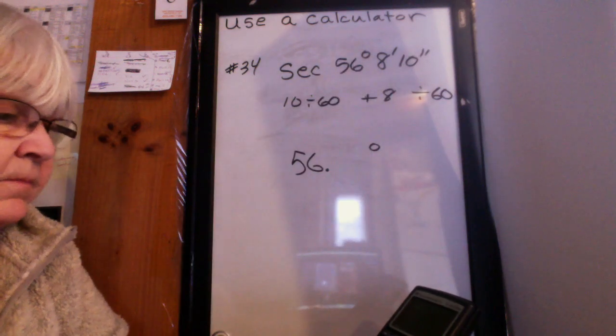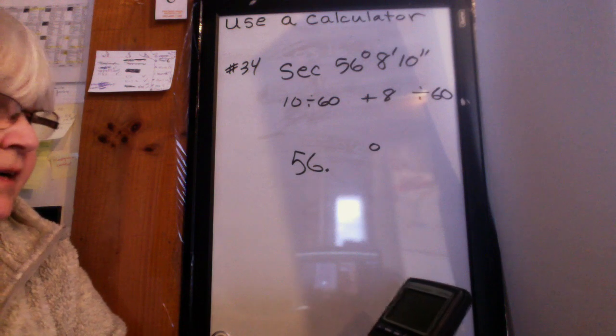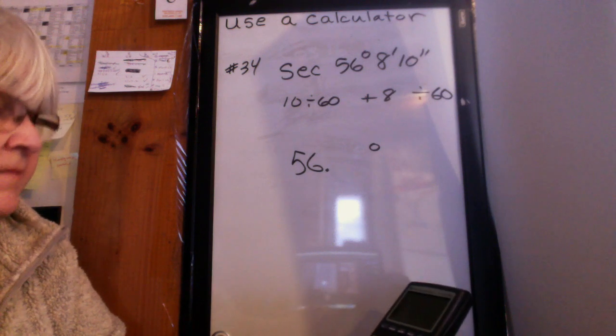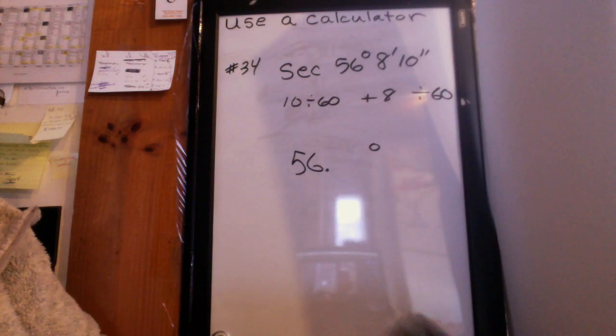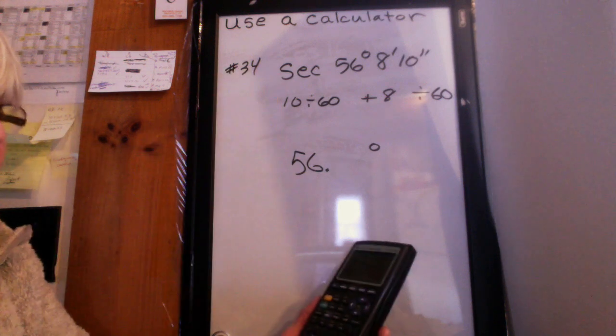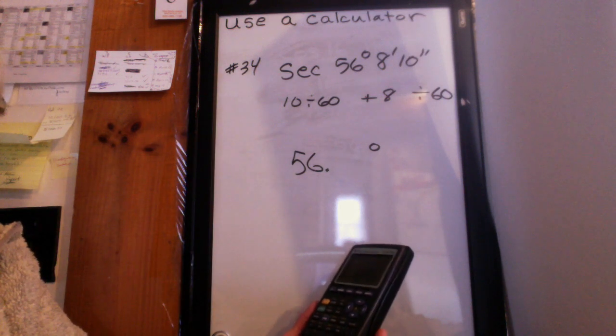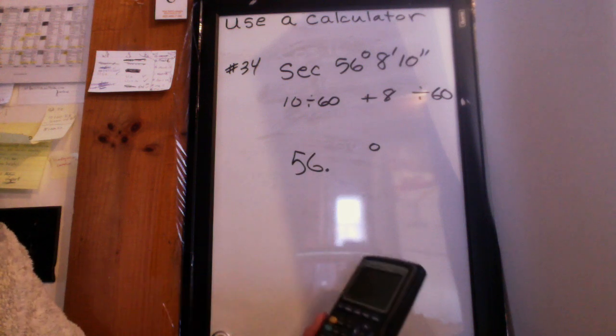Now do plus eight. Hit enter. Now do divided by 60 again. And this time you can see what I get: point one three six one one. You can stop the video to double check if you want. So then I'm going to add 56. So plus 56. Hit enter. So now I have 56 plus that long decimal.